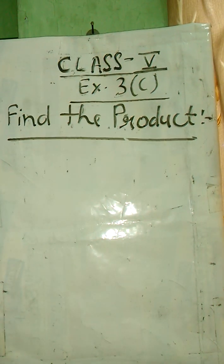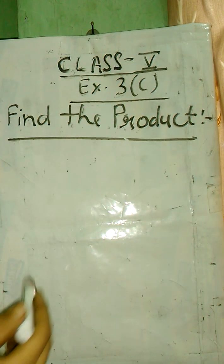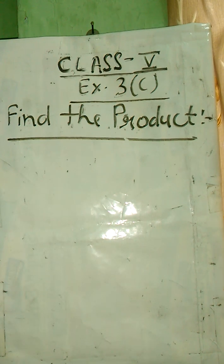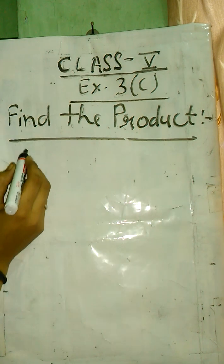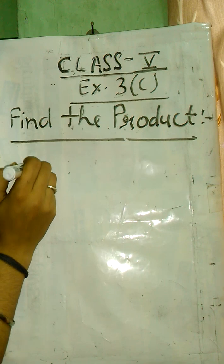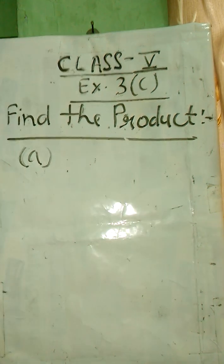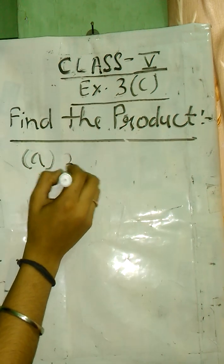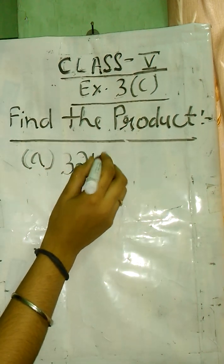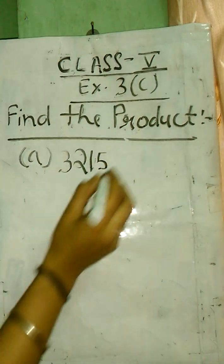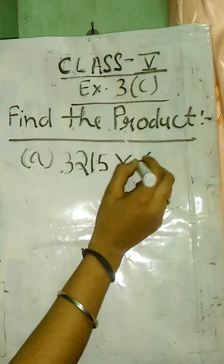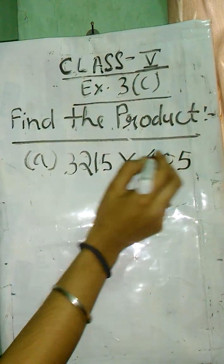Let's start the Class 5, find the product multiplication of numbers, Exercise 3C. First question: 3,215 × 405.